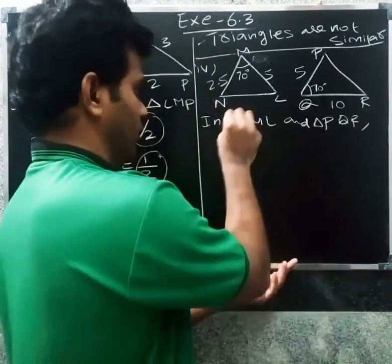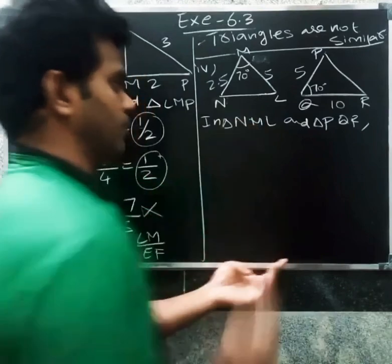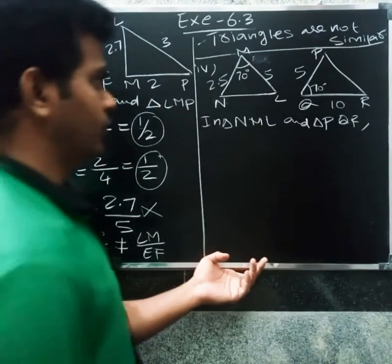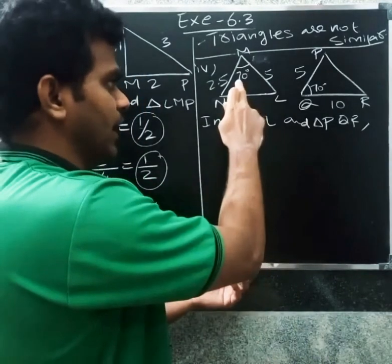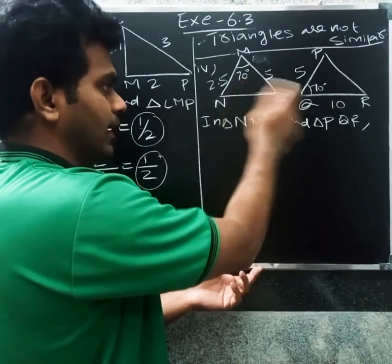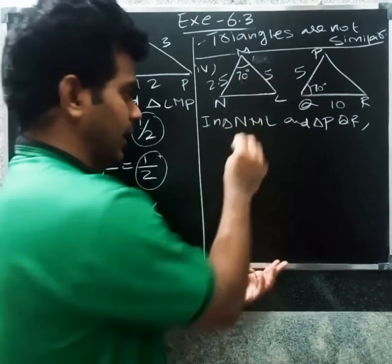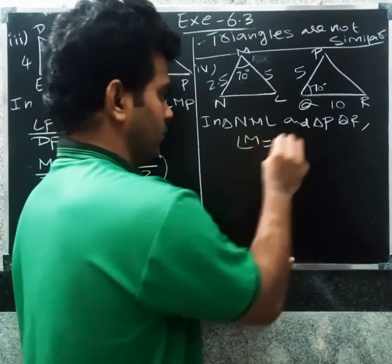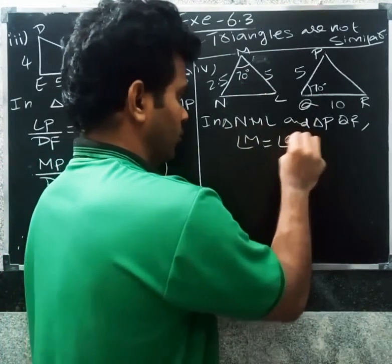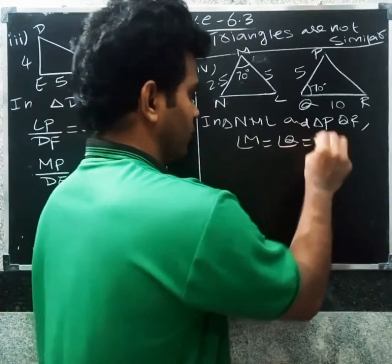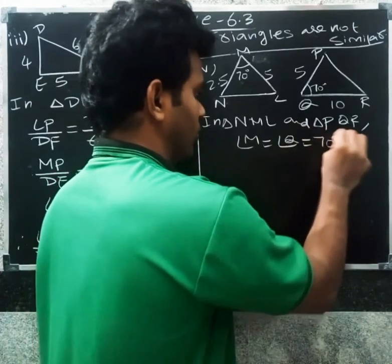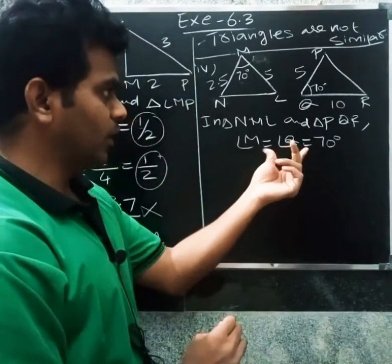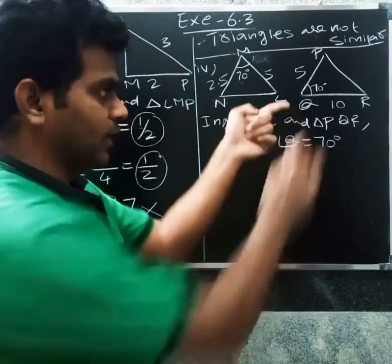Fourth question: in triangle NML and triangle PQR, angle M equals angle Q equals 70 degrees. If the angles are equal, we then check the included sides.